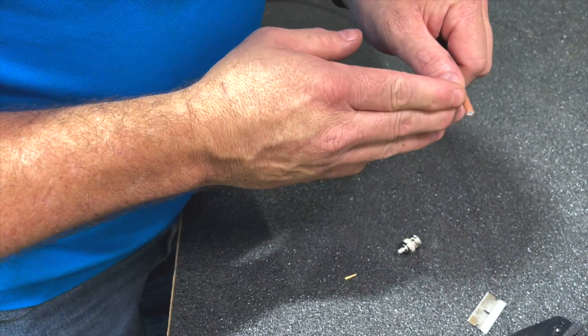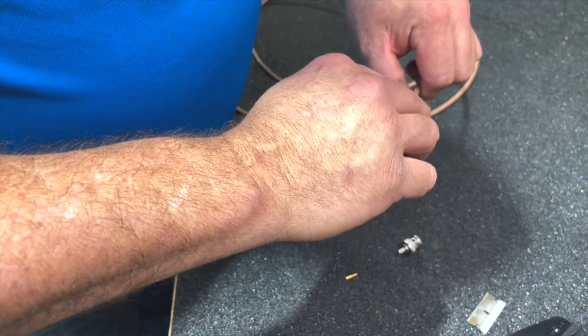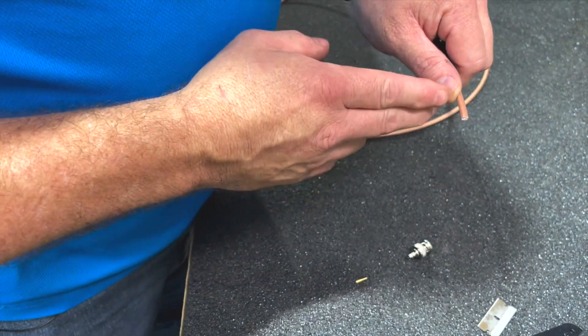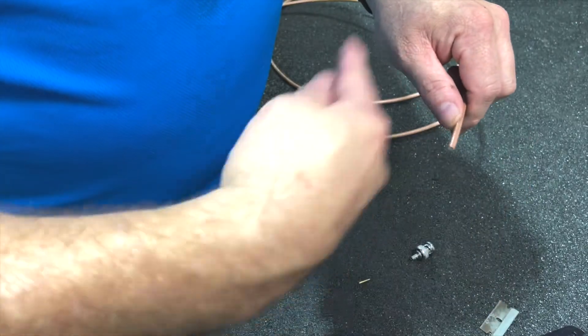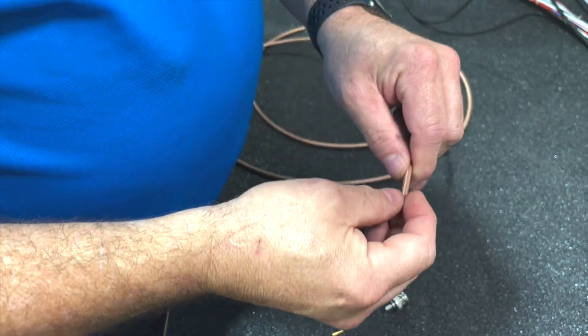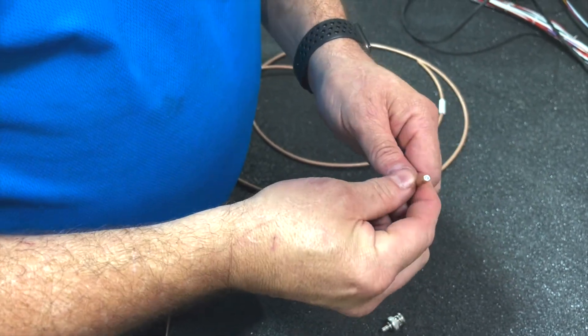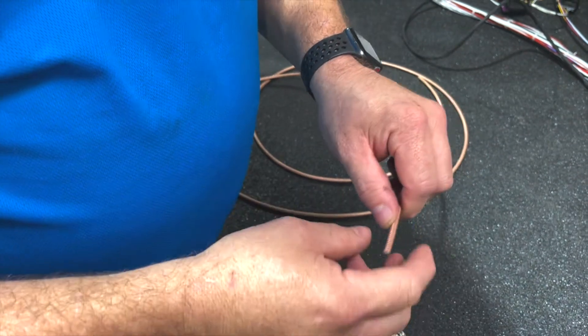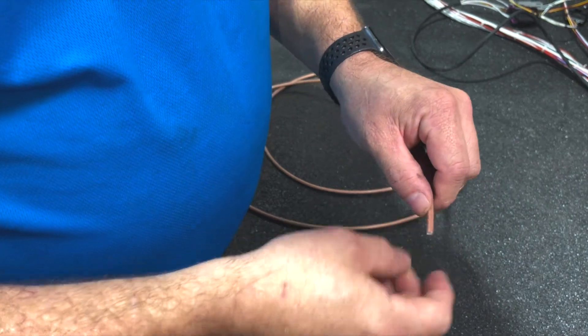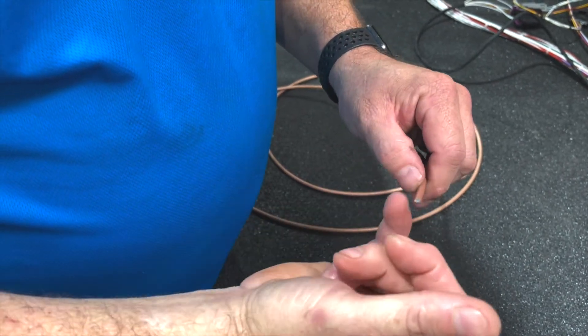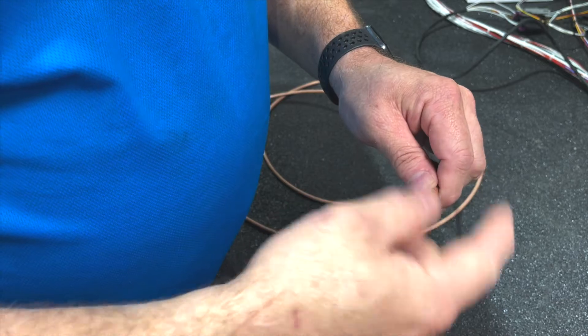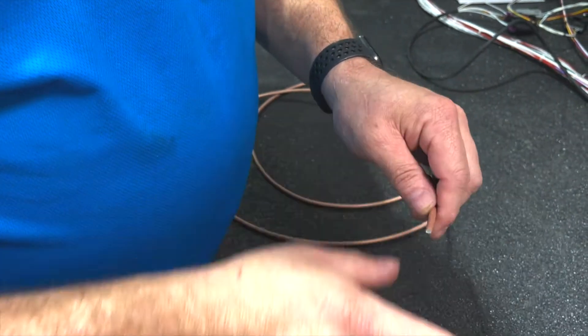Now we need to strip this back about a half inch and get this outer jacket off so we can expose the shielding. One thing I will caution against is the tools they sell online where you have three blades and you spin it around and it strips everything at once. That works fine on RG-58 or even LMR-400, but on RG-400 it causes too many problems. Anytime somebody has an issue with coax, it's usually because the shield is grounded to the center pin, and every time it's because they used one of those tools. We don't use them.